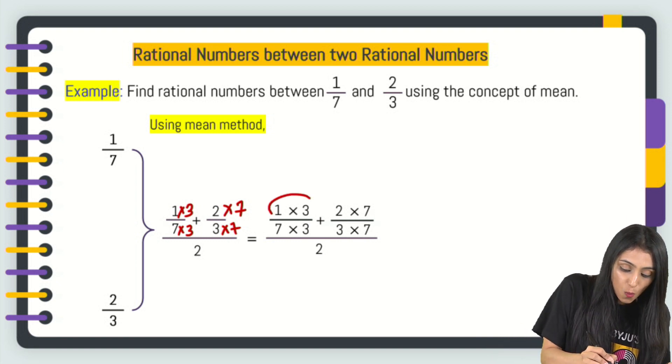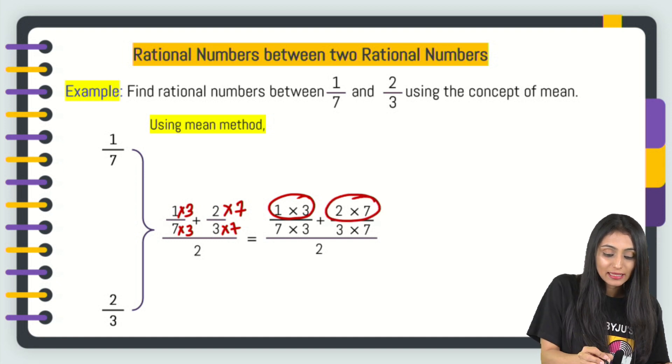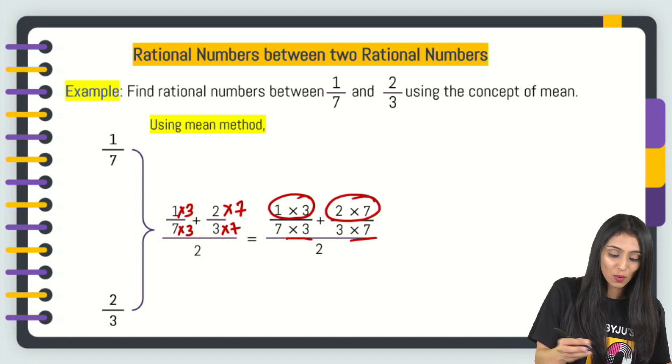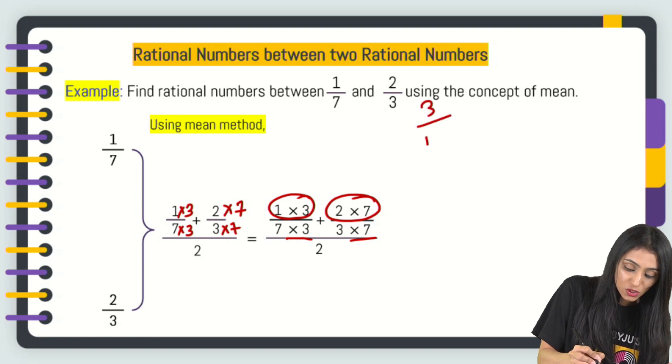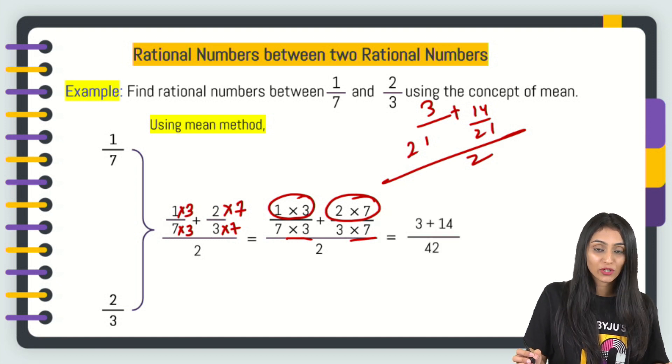Now, you just have to simplify this. 1 times 3 is 3, 2 times 7 is 14, and in the denominator that's the same, it's 21. So, we have 3 by 21 plus 14 by 21 divided by 2. What is this going to be? 3 plus 14 by 42.